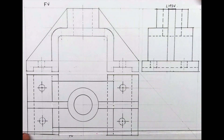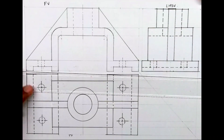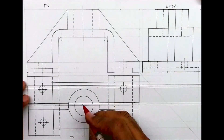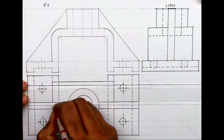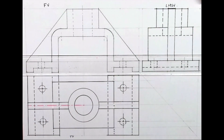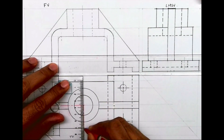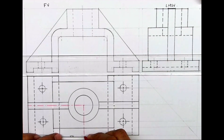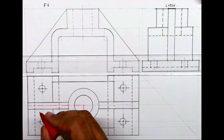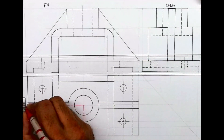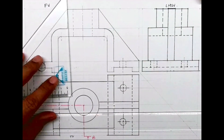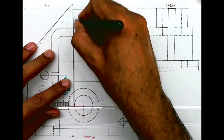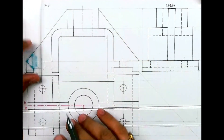We are done with the side view. Now we need to do the half sectional front view. The cutting plane is given like this. This is B, this is A, and this is the centerline. This part will be dark.